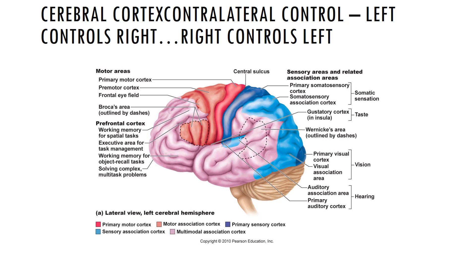The somatosensory association area lies posterior to the primary somatosensory cortex. This region integrates and analyzes somatosensory inputs from the primary somatosensory cortex with memories of previous experience to produce an understanding of what is being felt. For example, it allows you to recognize that the cold, flat, round thing in your pocket is a quarter.